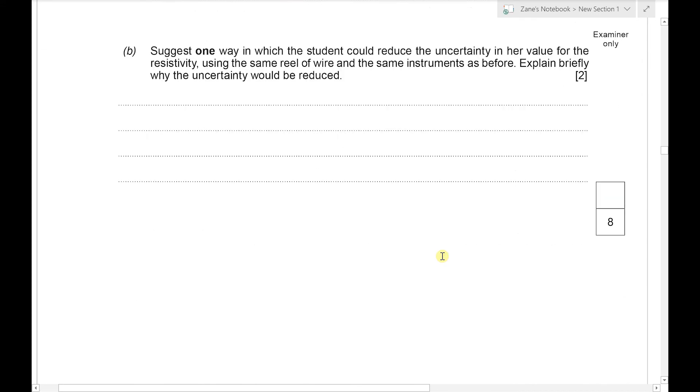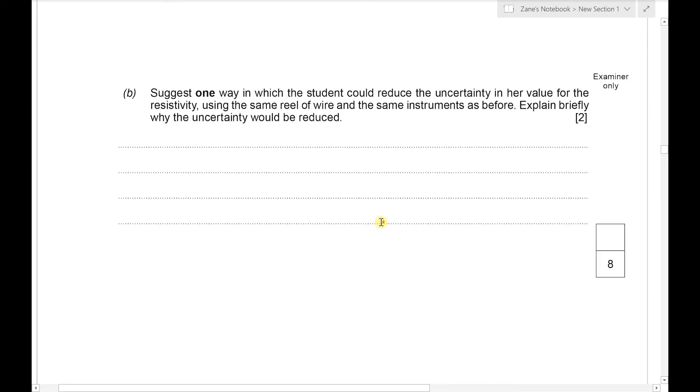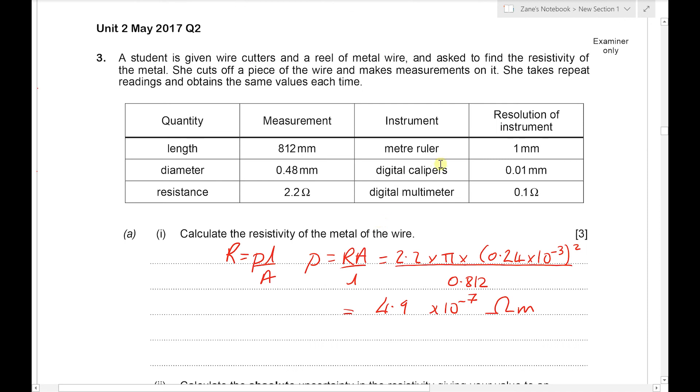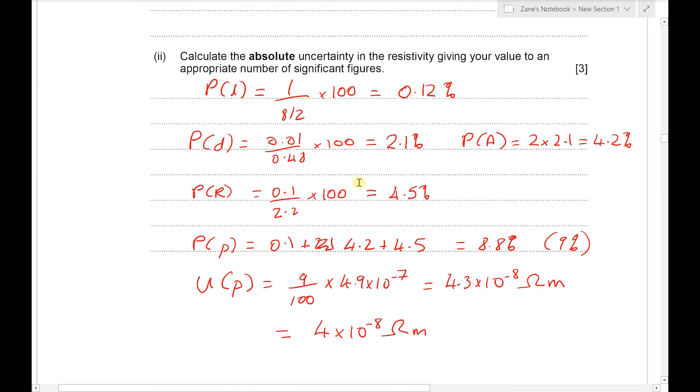Finally, we have to suggest one way in which the student could reduce the uncertainty in a value for the resistivity using the same reel of wire and the same instruments as before. We're going to explain briefly why the uncertainty would be reduced. Well, when we try to improve experiments and reduce percentage uncertainties, we always go for the thing with the largest percentage uncertainty, which is the resistance.